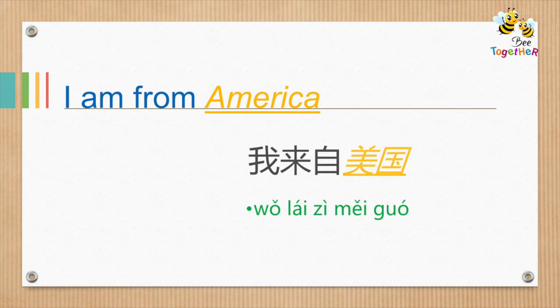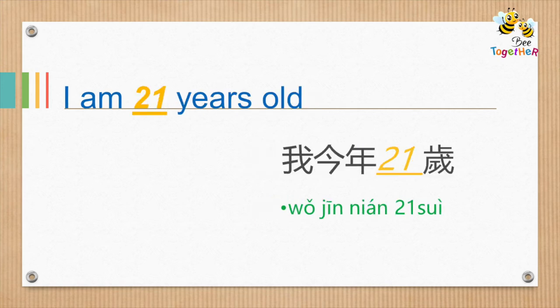我的名字叫王苏珊。我来自美国。I am from the USA. I am 21 years old. 我今年二十一岁。I am 21 years old. 我今年二十一岁。